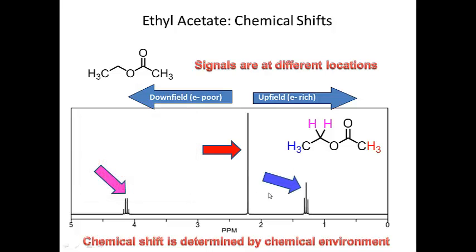The blue set of protons appears furthest upfield because it is furthest away from any electronegative atom or functional group. The red protons — the singlet — appear around 2.1 to 2.2 ppm because they are adjacent to an sp2 hybridized carbon. The pink set of protons appears furthest downfield because that carbon is adjacent to a highly electronegative oxygen atom, so those pink protons are deshielded by oxygen's electron-withdrawing effect.